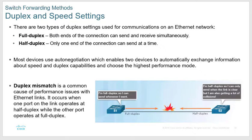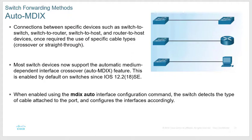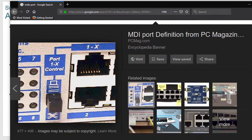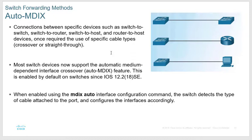Sometimes on old switches you'll see an MDIX button — Media Independent Interface Crossover. In the old days, switch-to-switch connections required a crossover cable because the ports were hardwired. The MDIX button toggled between straight-through and crossover. Nowadays ports are auto-sensing. However, on the CCNA exam, anytime you go from switch to switch they still expect you to write 'crossover cable' even though in today's world a straight-through cable will work.